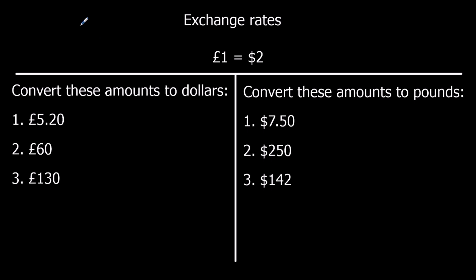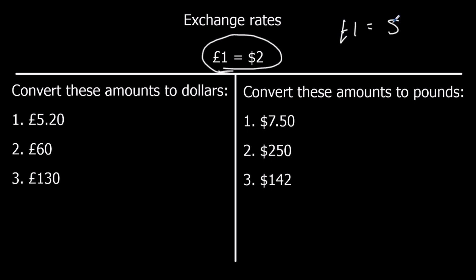So here we've got an exchange rate question. We've got an exchange rate here — it says £1 is equal to $2. When we get exchange rates we always have a 1, so something's 1 and then it's equal to something else, for example £1 is equal to $1.51. We always have a 1, and when we're doing the exchange rate we're really looking at this 2 — that's going to be the key number we're going to use.